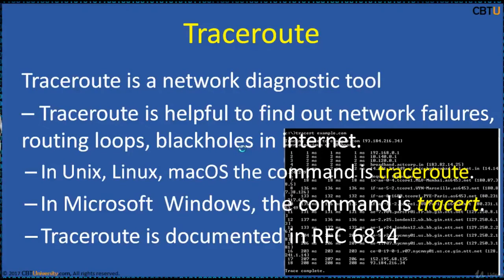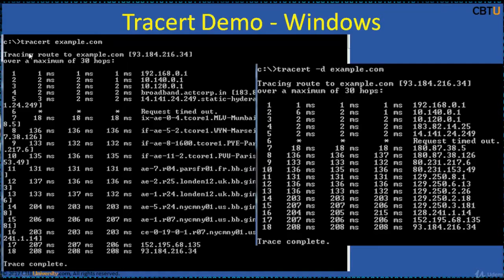Traceroute proceeds unless all three packets sent are lost more than twice, then the connection is lost and the route cannot be evaluated. PING, on the other hand, only computes the final round-trip time (RTT) from the destination point. In IPv6, the tool name is Traceroute6 or traceroute6.